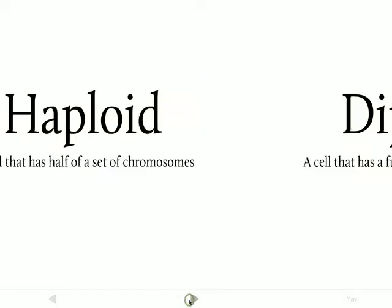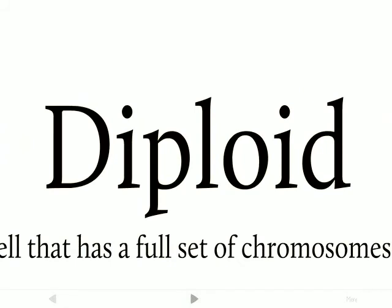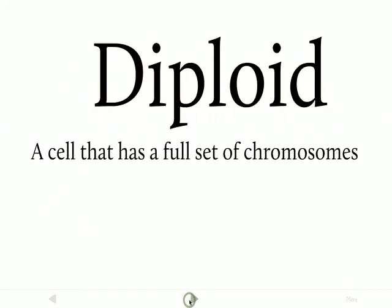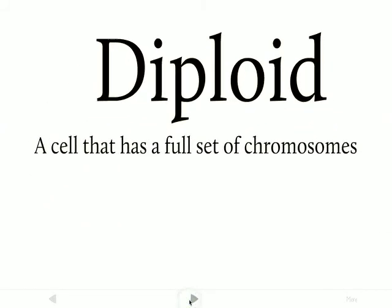And the opposite of a haploid cell is a diploid cell. A diploid cell is a cell that has a full set of chromosomes — it has the same number of chromosomes as its parent cell had.